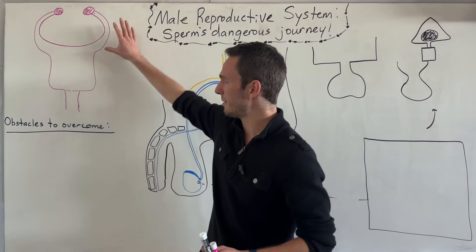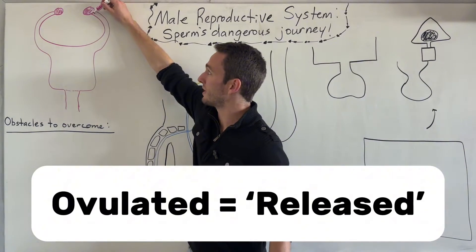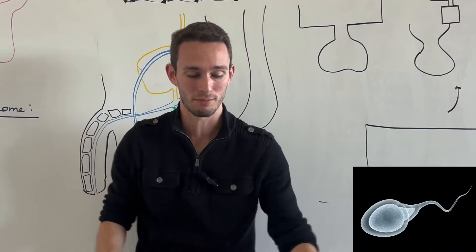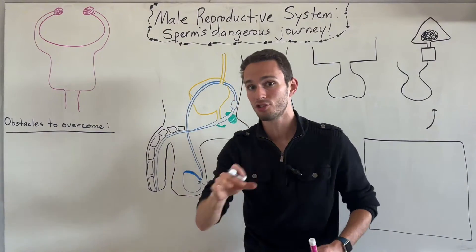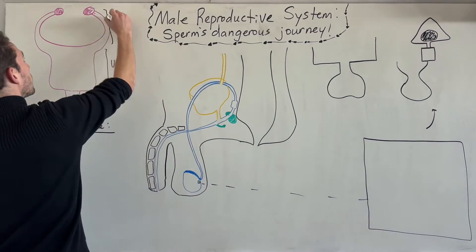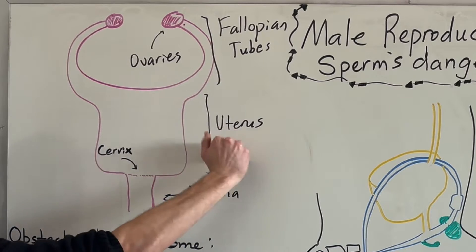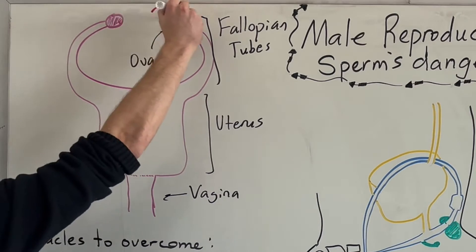First, the female reproductive tract. One egg is usually ovulated at a time, way up here, basically saying come on sperm, good luck trying to get to me. Let me label these structures real fast. The sperm has to get through the vagina, cervix, uterus, and then swim up through the fallopian tubes to finally get to that oocyte, which is the egg cell.